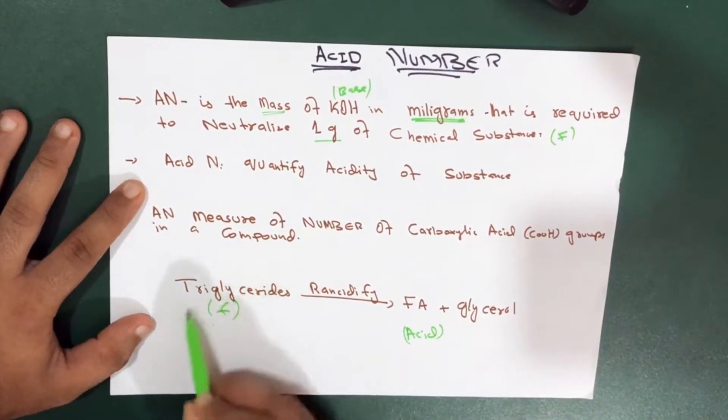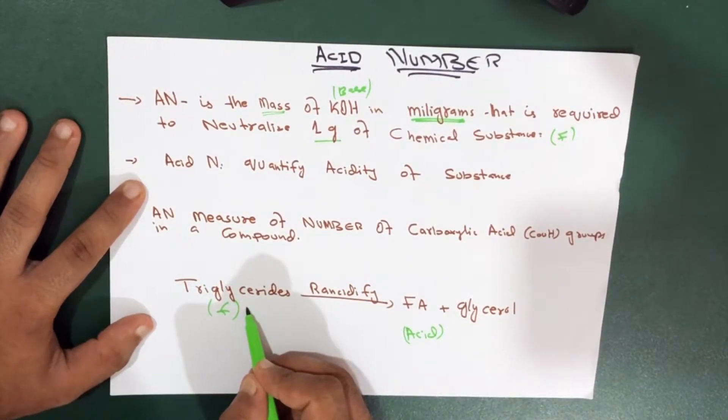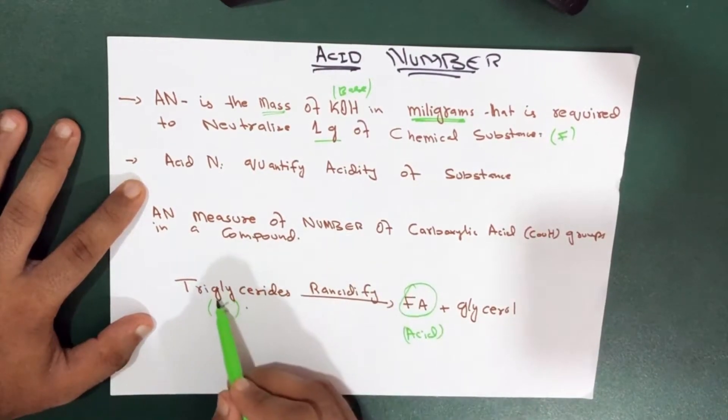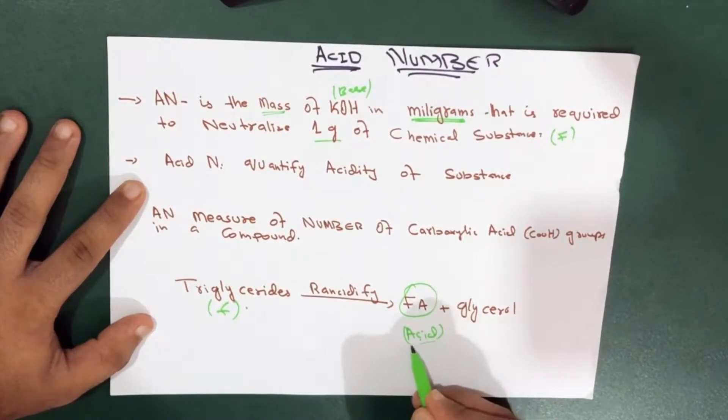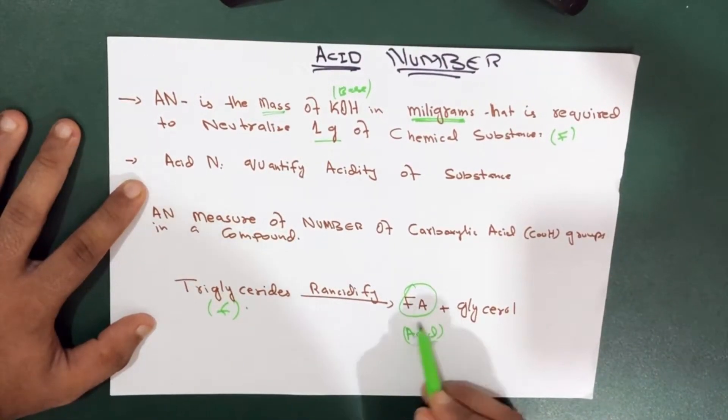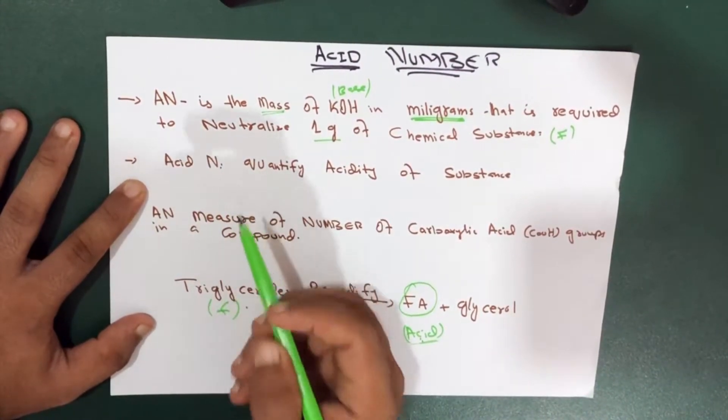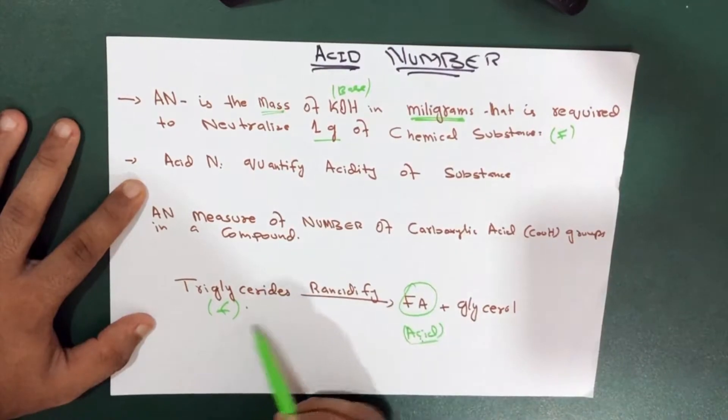And you know how much fatty acid is present in the triglyceride? How would we know? We know from this quantity because this fatty acid came from where? From the triglyceride. So this is actually the quantity that is present in this fat. This fatty acid, this is the quantity of the fatty acid present in this fat. So acid number is the number that quantifies acidity of a substance.